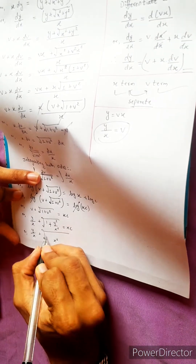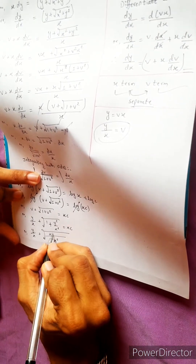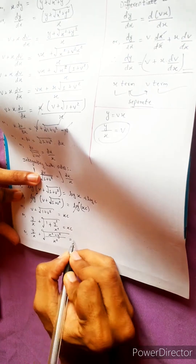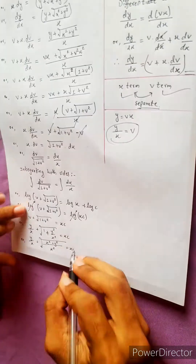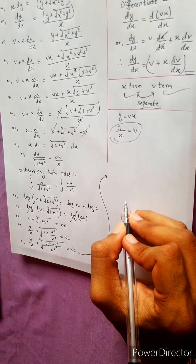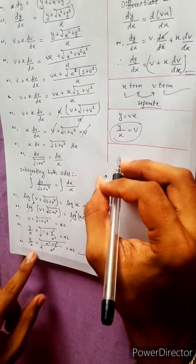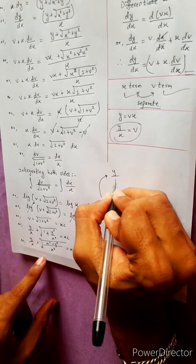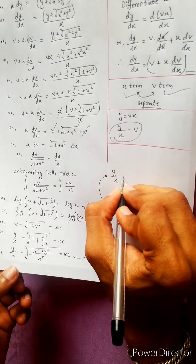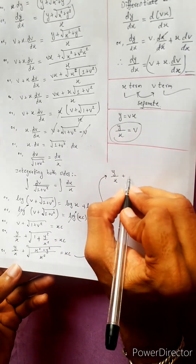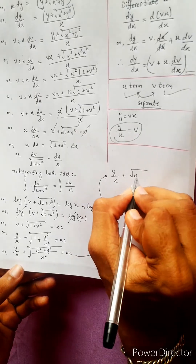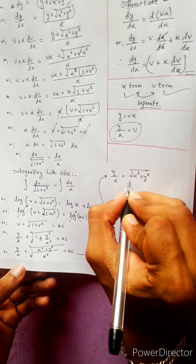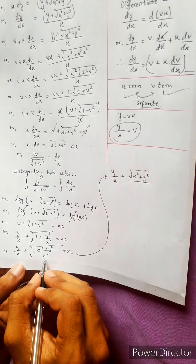Taking LCM x squared: x squared plus y squared under the root, divided — then cancel. So y by x plus x squared by x squared.